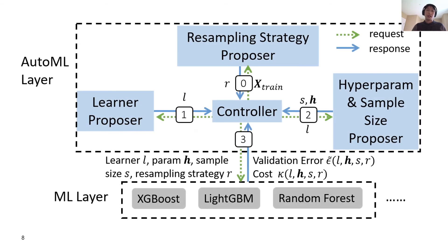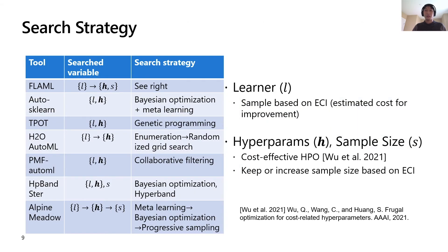Based on these design guidelines, we propose a novel adaptive system to choose a search order optimized for both cost and error. The AutoML layer includes a learner proposer, a hyperparameter and sample size proposer, a sampling strategy proposer, and a controller. It iteratively decides the learner, hyperparameter, and sample size at each search iteration on the fly. Our system differs from previous work in how we decouple the search variables and search strategies, as the table shows.